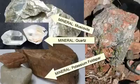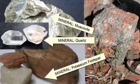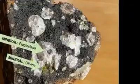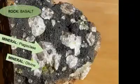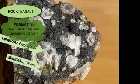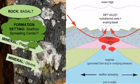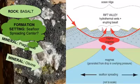Each mineral can form only if the temperature, pressure, and chemical conditions are just right, so finding a particular mineral in a rock can tell us a lot about the temperature, pressure, and chemical environment of its formation. In addition, mineral size and form, and the exact mix and proportion of minerals in a rock, provide further clues and details.